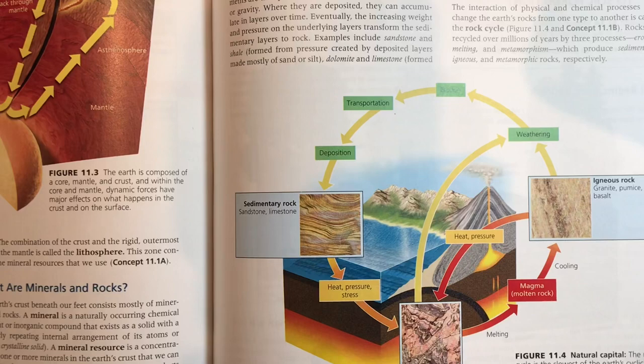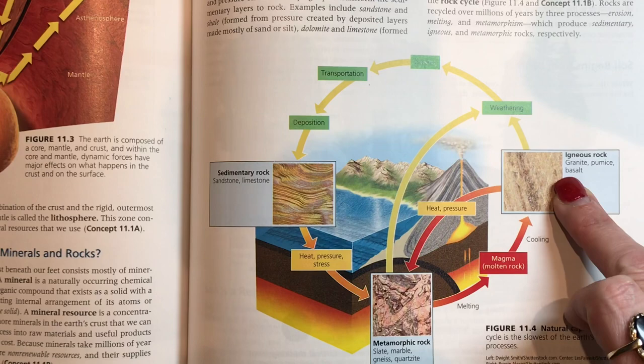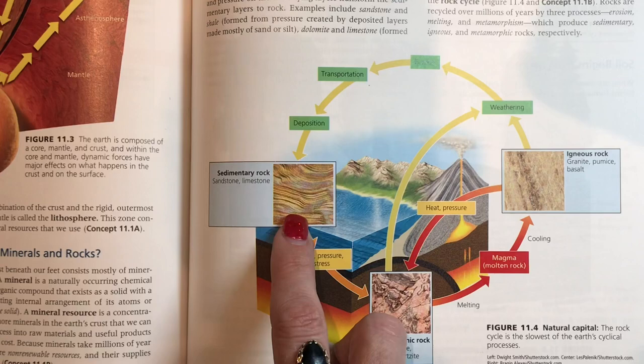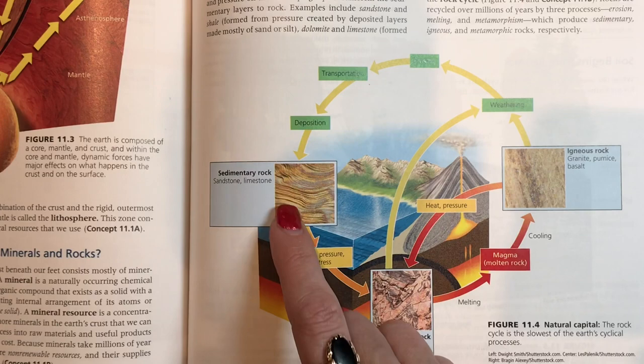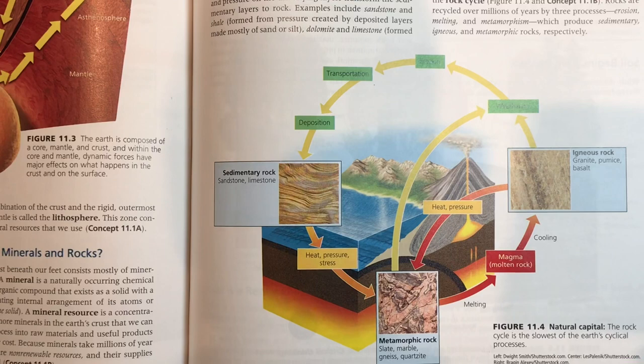When lava cools, that is called igneous rock. Great examples are granite and basalt — it's shiny with no fossils. Sedimentary rock is when rock is broken down into sediment through weathering, then heat but mostly pressure pushes it together and causes it to stick. It's stratified and this is where you mostly find fossils. Sandstone and limestone are two great examples.